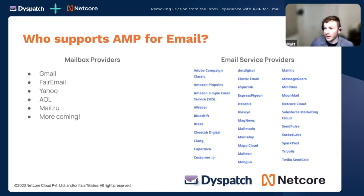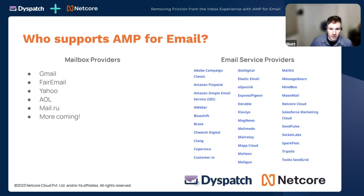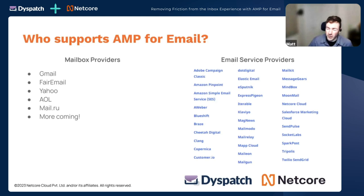Platforms like Dispatch and NetCore will make sure that the fallback experience you get on Apple Mail is still really great. Instead of using the app in the email, you'll get a link to a landing page where you can use the app, and we'll make sure that's an awesome experience without you having to do extra work. Not all providers will be there to support you with that — something to think about when evaluating AMP options.